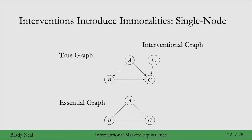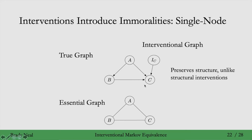Importantly, parametric interventions preserve the causal structure, unlike structural interventions. A structural intervention on C would have deleted the A-to-C edge and the B-to-C edge. By preserving this causal structure, we're able to detect some immoralities now with this parametric intervention node. We have an immorality with A, C, and I_C, and that allows us to direct this edge from A to C.